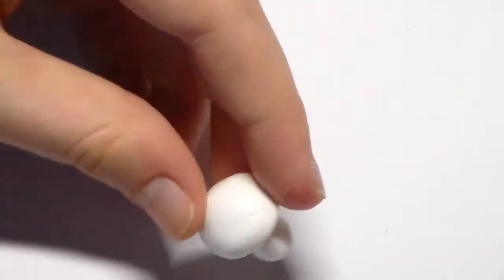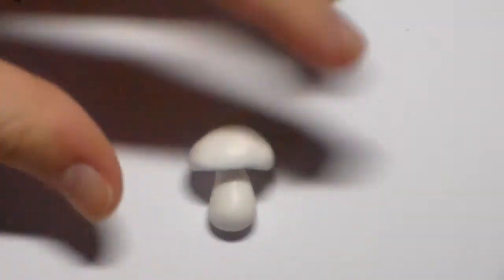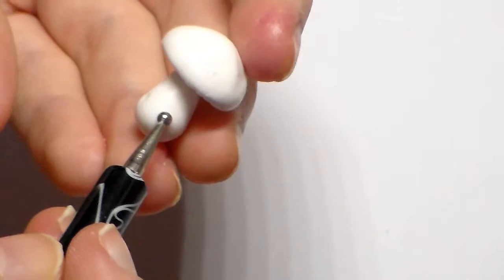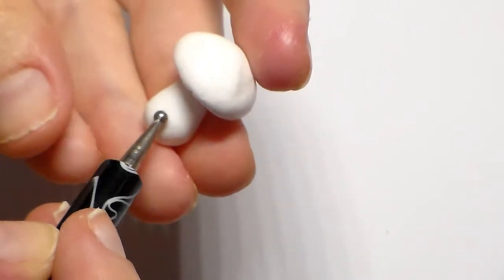Now for the kawaii part. Add two little holes on the bottom of the teardrop shaped area to make the eyes. I used a dotting tool for this.